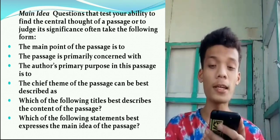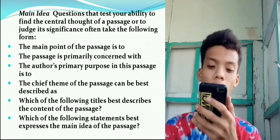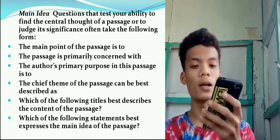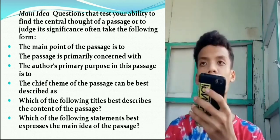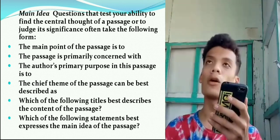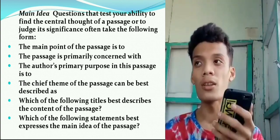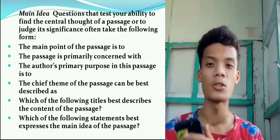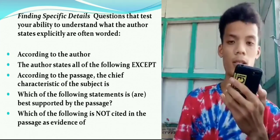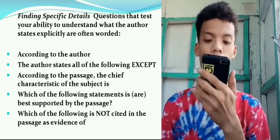The first category of reading comprehension questions is main idea questions, which test your ability to find the central thought of a passage or to judge its significance. The second category is finding specific details — questions that test your ability to understand what the author states explicitly, focusing on what is clearly stated by the author and on complete details.